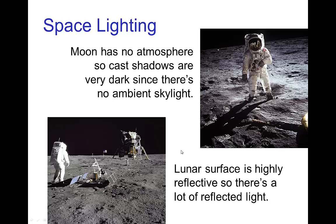Now there is a significant amount of reflected light because the lunar surface in most parts of the moon is highly reflective. So you see a fair bit of reflected light on the lunar lander even on the side which is not facing the sun.